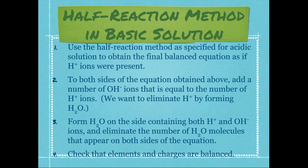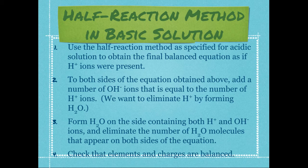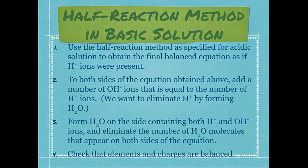So how do we use the half-reaction method if this reaction takes place in a basic solution? There aren't excess hydrogen ions in a basic solution — there's excess hydroxide. We'll follow the same steps as for an acidic solution until we're done, and then add hydroxide ions to both sides of the balanced redox reaction — enough to turn all the H⁺ into water molecules. The other side will then have excess hydroxide ions, and we may need to cancel some water molecules to get the lowest whole number coefficients.